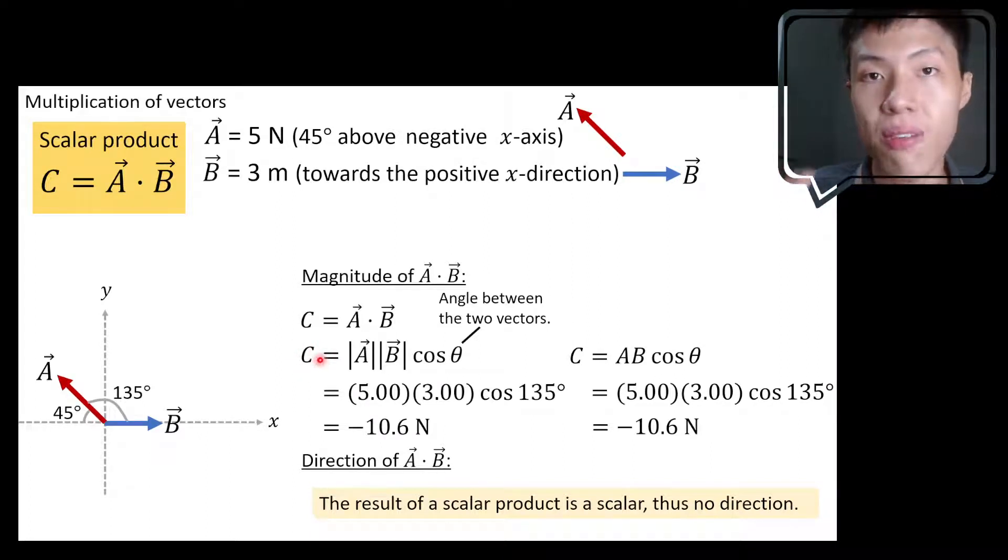If C today is a vector, if the result here is a vector, then the magnitude of a vector must be positive. Magnitude of a vector must be positive. But if it's a magnitude of a scalar quantity, it can be positive or negative. Right now, since this is a scalar quantity, it can be positive or negative. That's the point I'm trying to relay here.